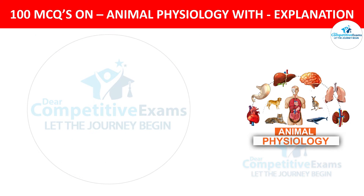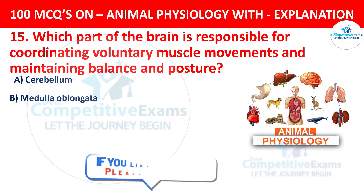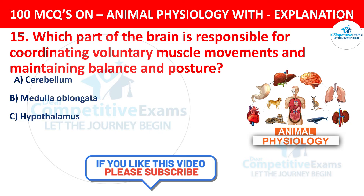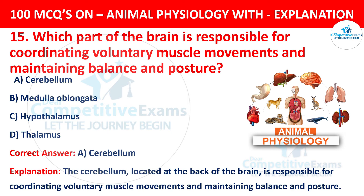Question number 15. Which part of the brain is responsible for coordinating voluntary muscle movements and maintaining balance and posture? The options are cerebellum, medulla oblongata, hypothalamus, or thalamus. The correct answer is A, cerebellum. The cerebellum, located at the back of the brain, is responsible for coordinating voluntary muscle movements and maintaining balance and posture.